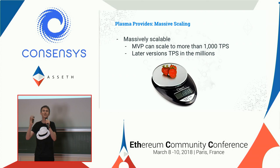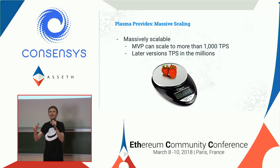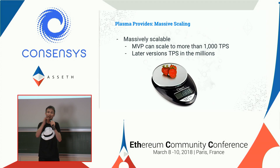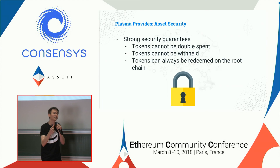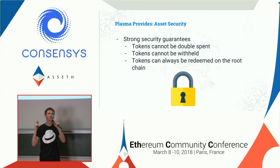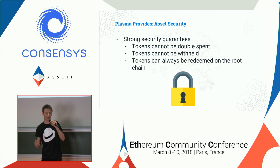Minimum Viable Plasma is about scalability — we're trying to scale the blockchain, but it's not scalability at all costs. It's scalability while maintaining decentralization. We want to make sure that the security of the Plasma chain is as secure as the root chain. Tokens cannot be double-spent. The Plasma MVP is a token transfer blockchain, UTXO-based, with the normal security guarantees of a token transfer blockchain.